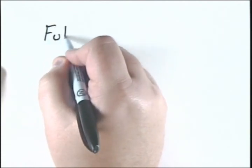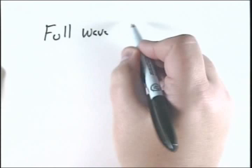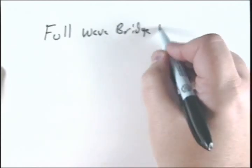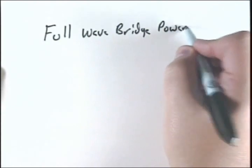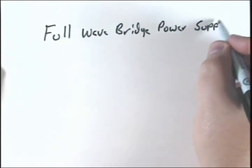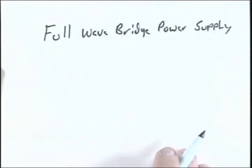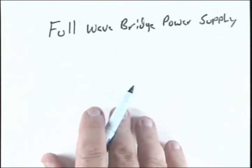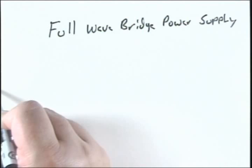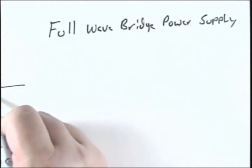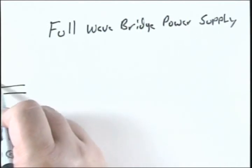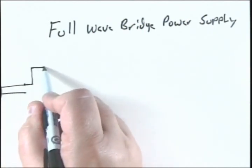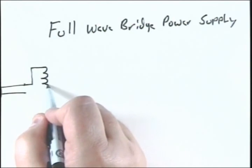Full wave bridge power supply. In this case, we start off just like the half-wave. We have our power coming in from our AC plug. We then want to go into our transformer.